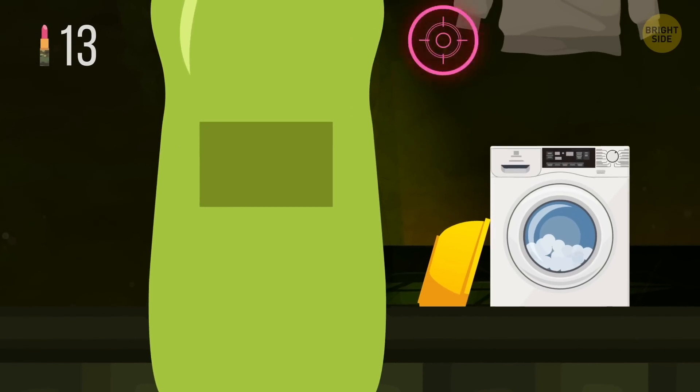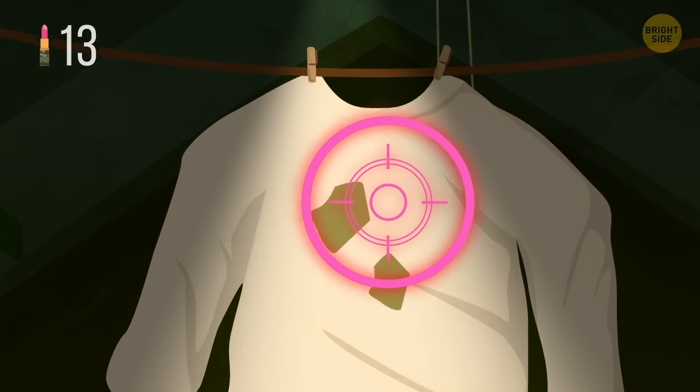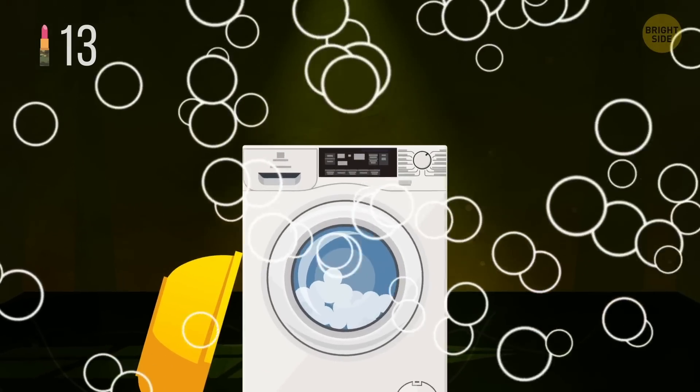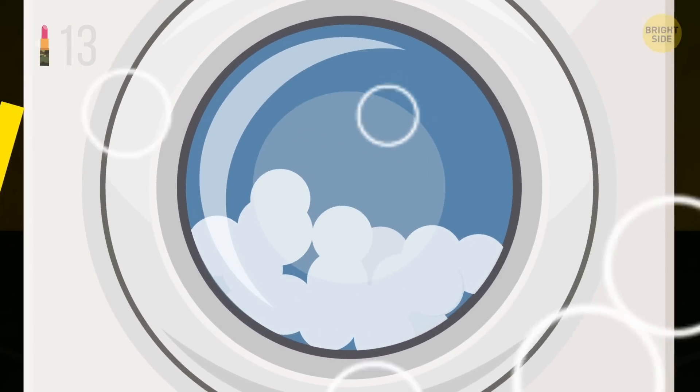Also, to make grease stains disappear, you can use dish detergent. Apply it on the dirty spot and rub until it gets all bubbly. After that, throw the item into the washing machine.